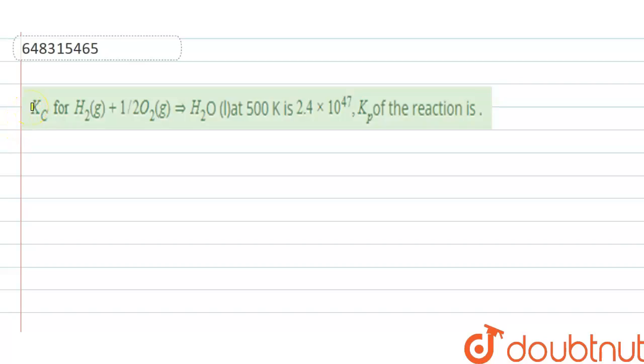Kc means equilibrium constant in terms of concentration. For this particular reaction, H2 gas plus half O2 gas giving H2O liquid at 500 Kelvin, Kc is given as 2.4 × 10^47.